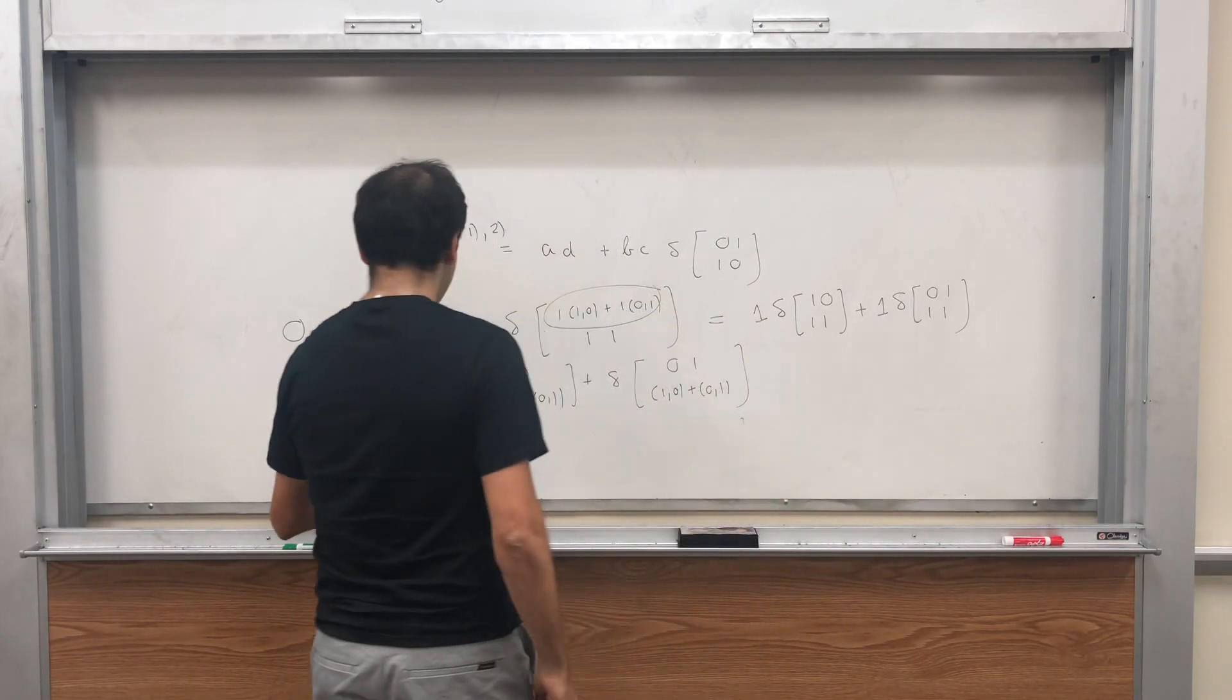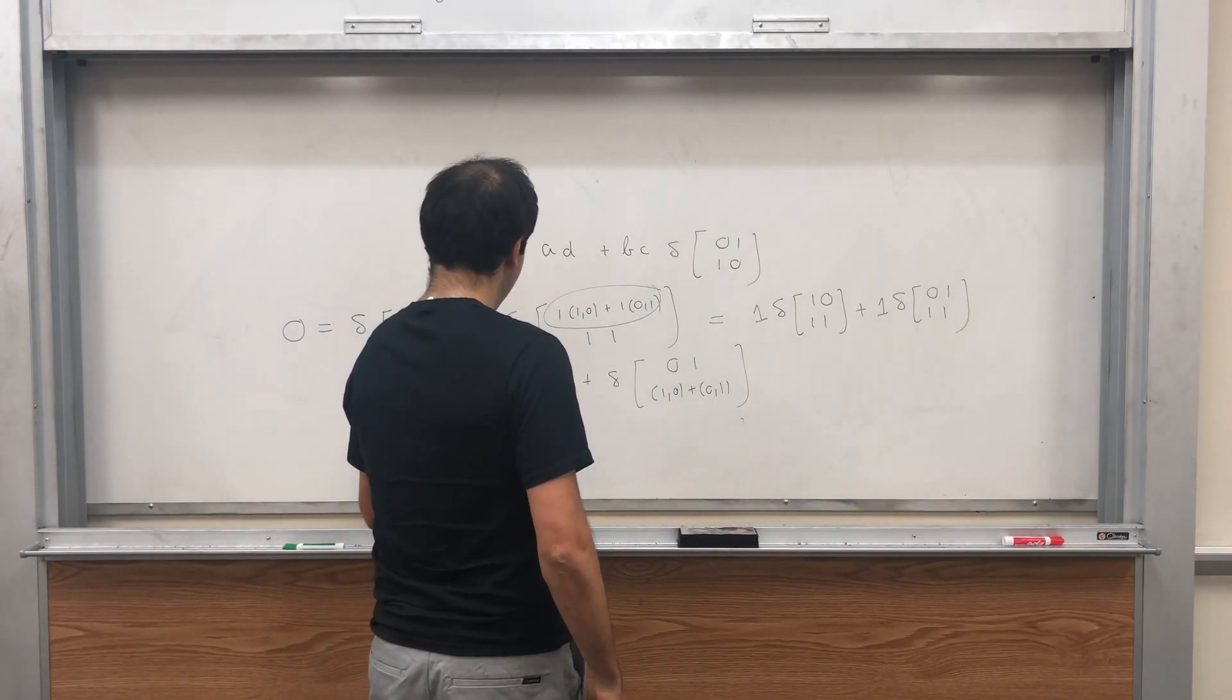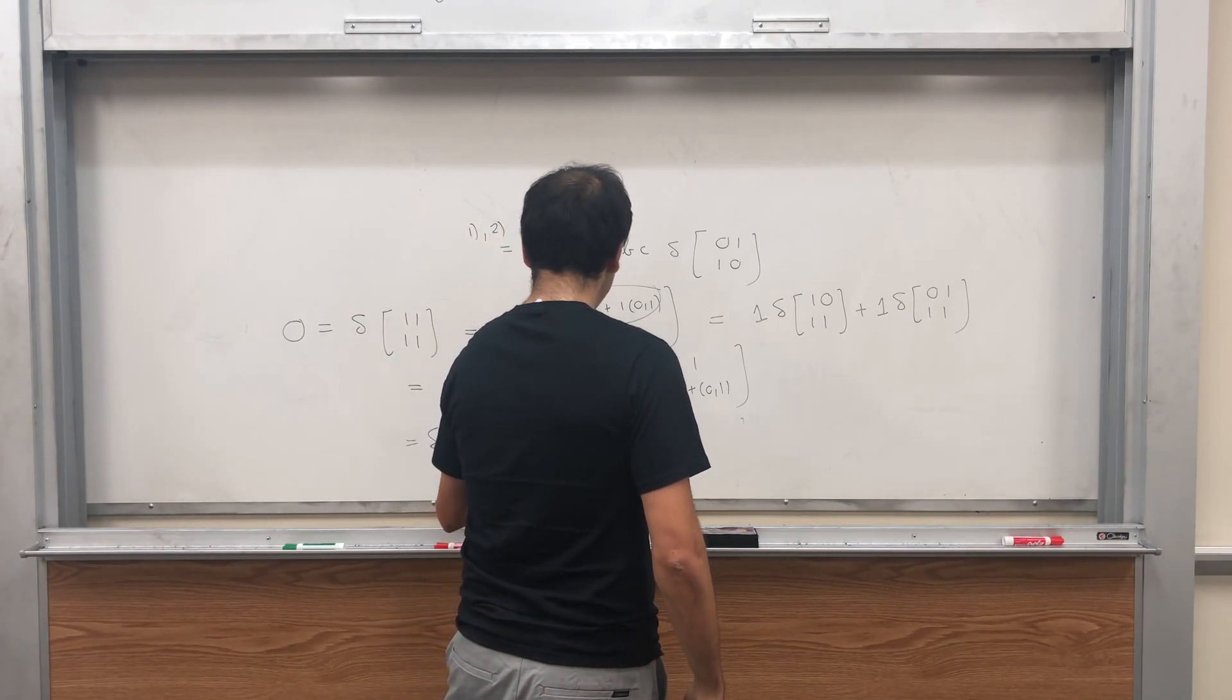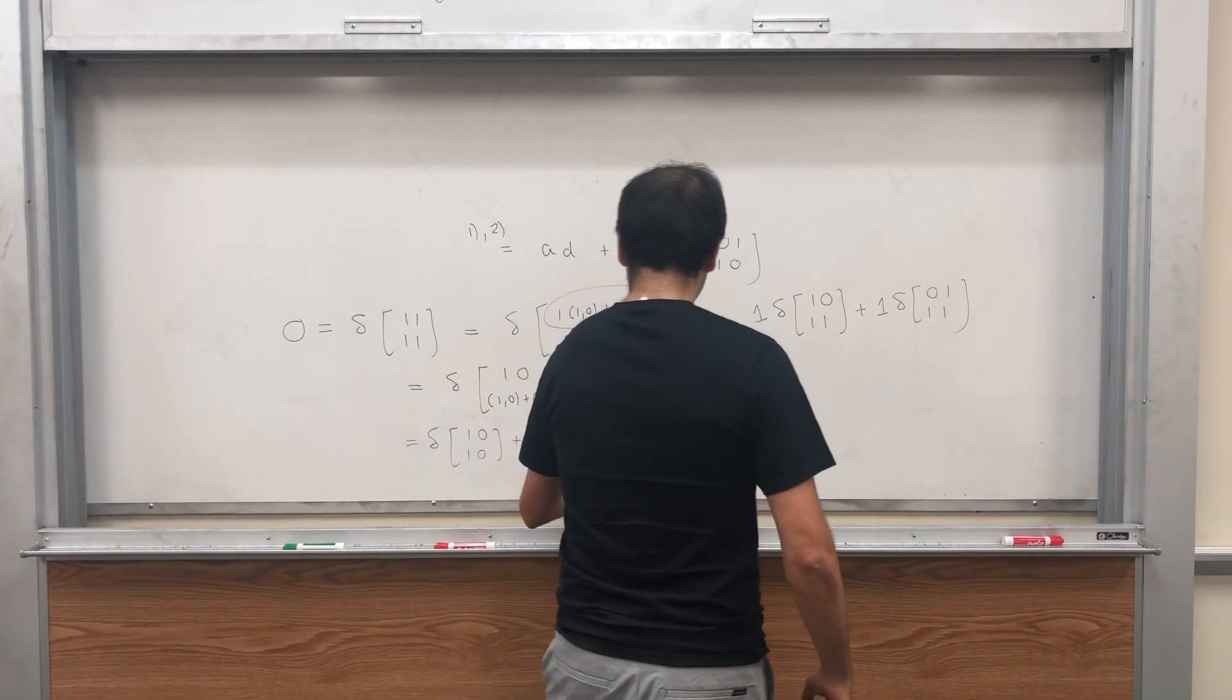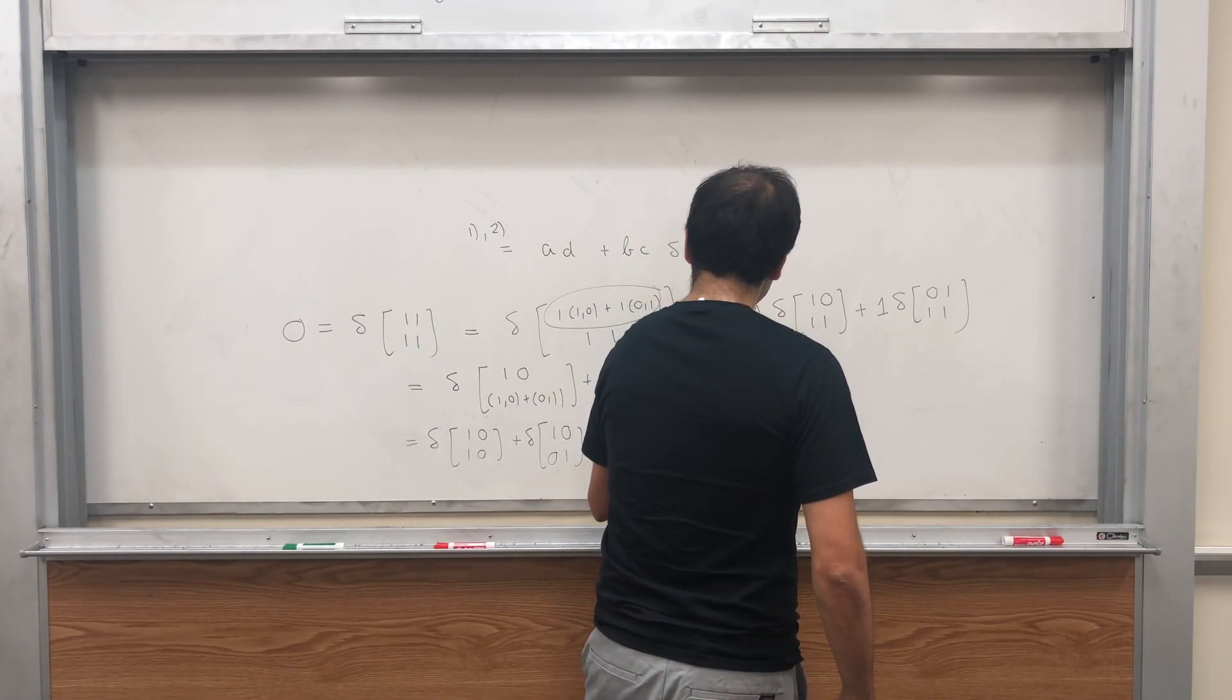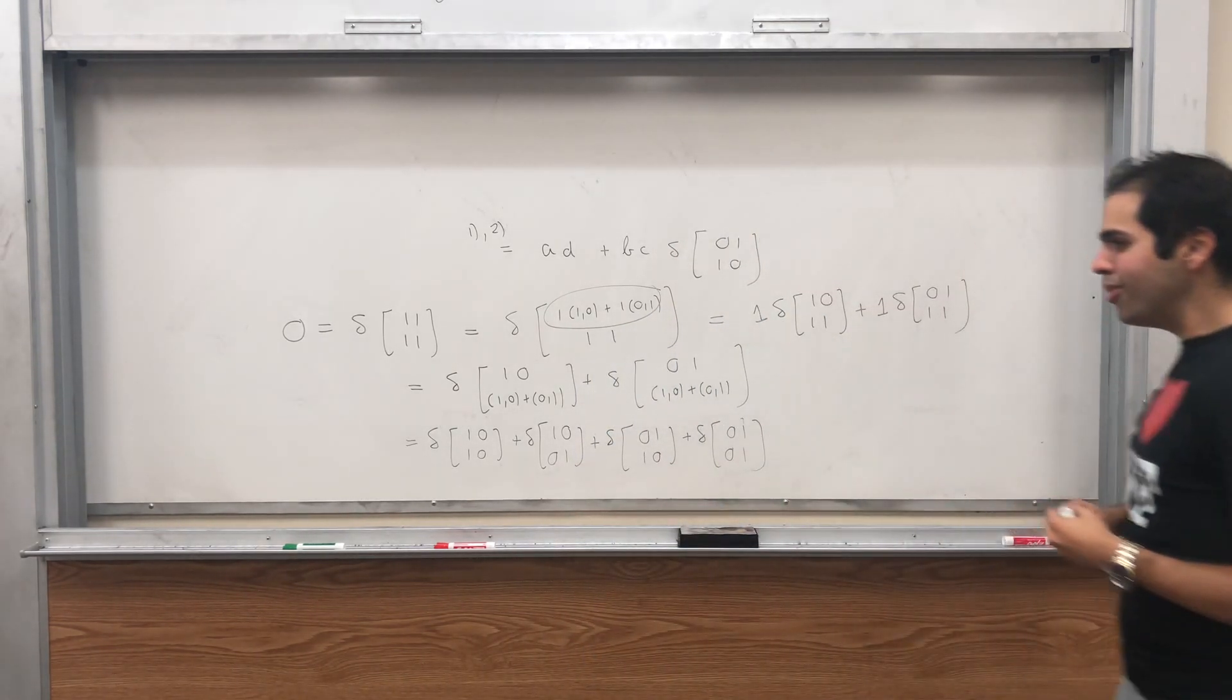This gives us delta of 1, 0, 1, 0 plus delta of 1, 0, 0, 1 plus delta of 0, 1, 1, 0 plus delta of 0, 1, 0, 1.